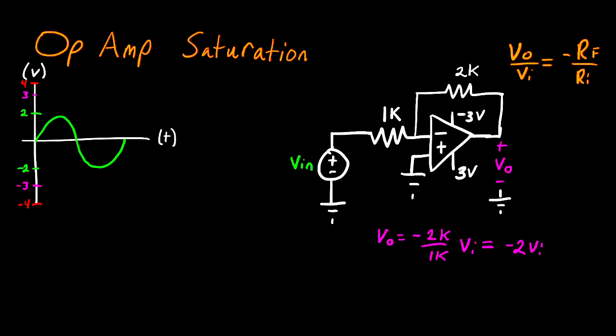So what this means, for Vi being this green sinusoidal voltage, is that the output voltage should be negative 2 times this graph. When the input voltage is positive 2, the output voltage should reach negative 4. And when the input voltage is negative 2, our output should be positive 4.